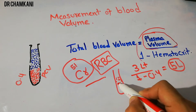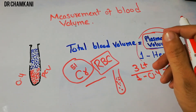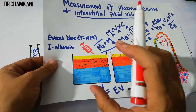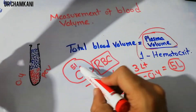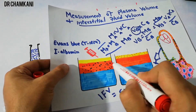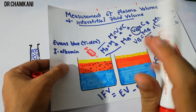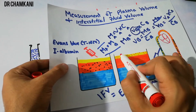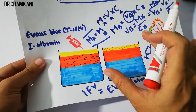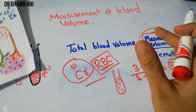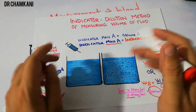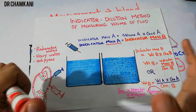Once the radioactive chromium-labeled red blood cells are injected and have distributed within the blood compartment, we apply the indicator dilution method. By measuring their concentration after distribution and applying the indicator dilution equation, we can determine the total volume of blood.